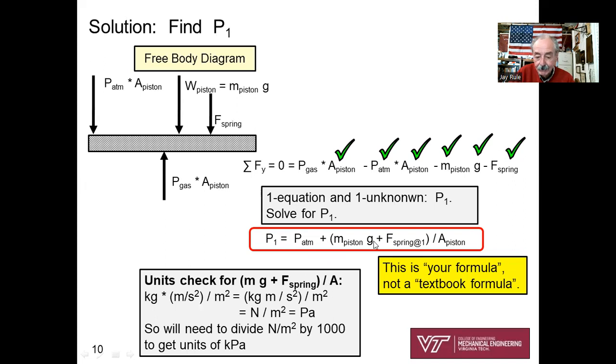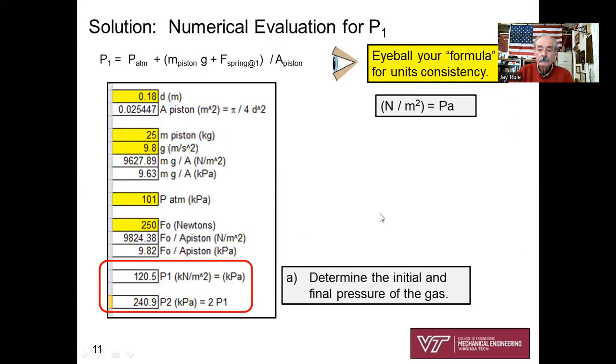Units check. Let's look at the units check for this big term here because it had better be kPa. The unit check of M G over A is kilograms, meters per second squared, divided by meters squared, or newtons per square meter, or Pa, pascals. So mental note, going to have to divide this term by 1,000 to get its units into kPa.